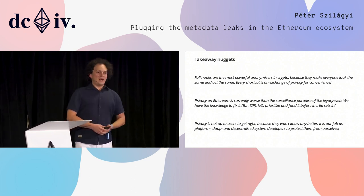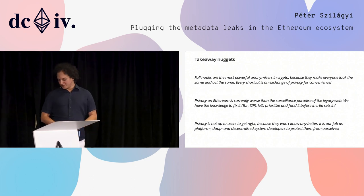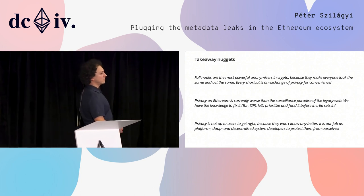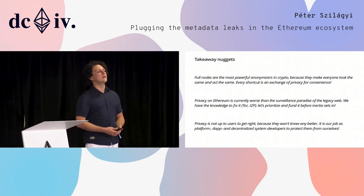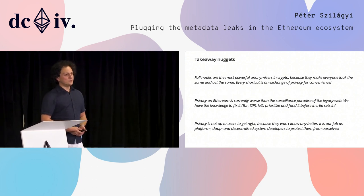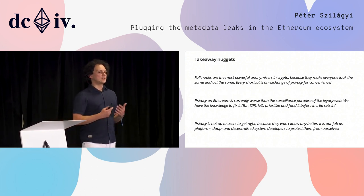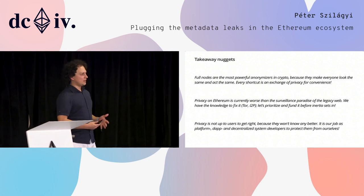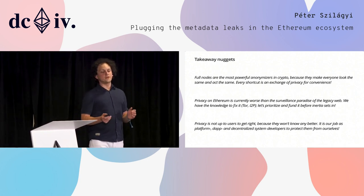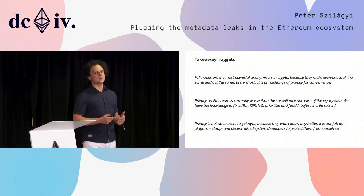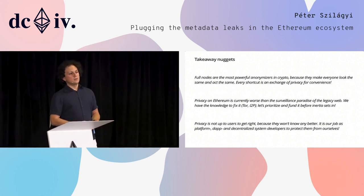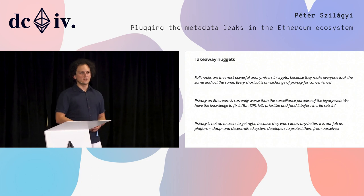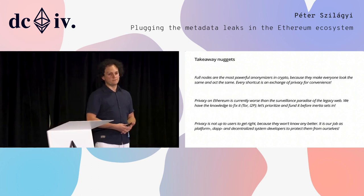Secondly, privacy on Ethereum is bad — really, really bad. But this doesn't mean it's an impossible task to solve. There have been existing projects, at least two major ones: the Tor network and I2P. Both these networks try to solve this exact problem of how to anonymize data so that you don't reveal too much about yourself. I'm not saying we should put Ethereum on top of these networks — they have a very broad scope and it might be too much. But there have been 20 years of research going into how to do this properly, so let's try to at least learn from their results and try to fix it.